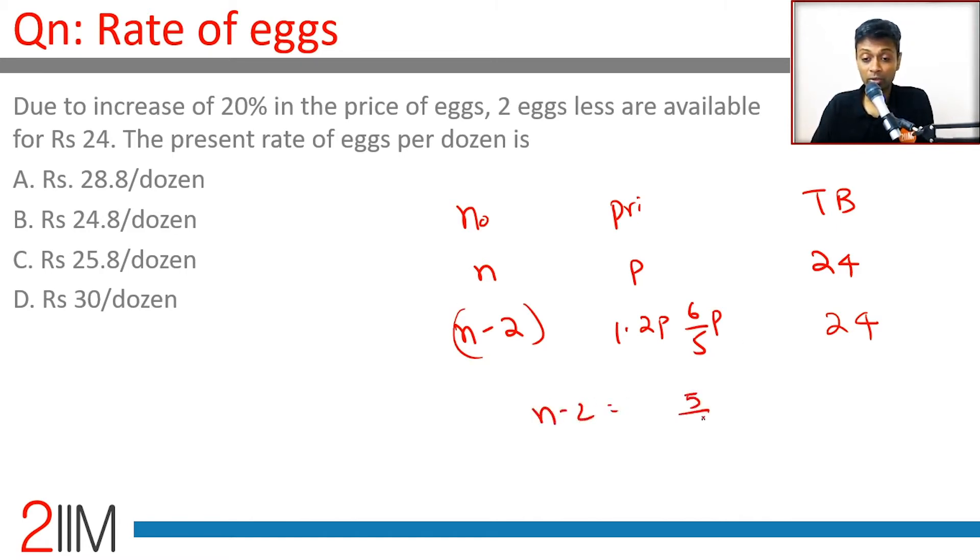N minus 2 equals 5 sixth of N. N minus 5 by 6N equals 2, 1 sixth of N is 2, N is 12.